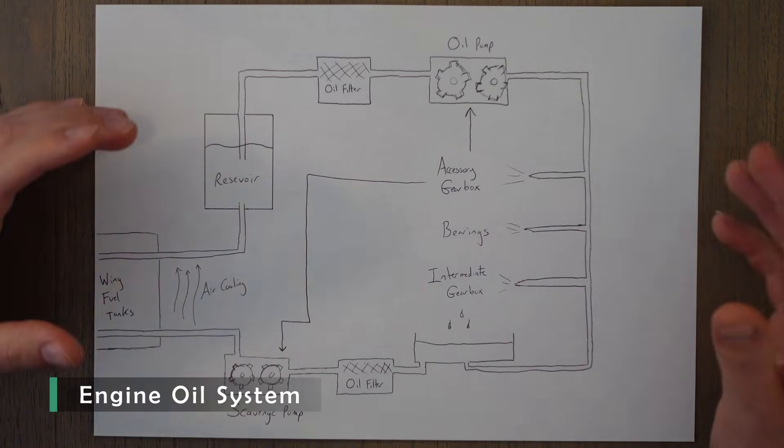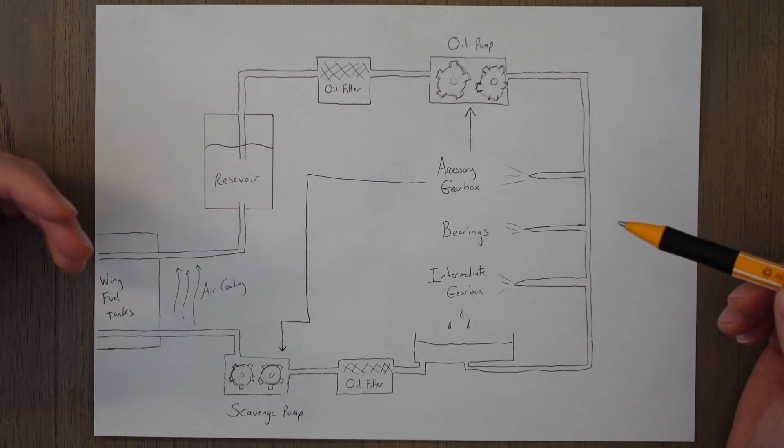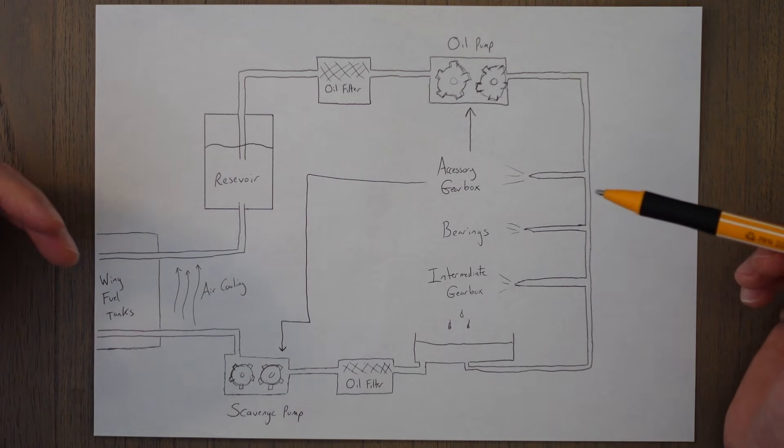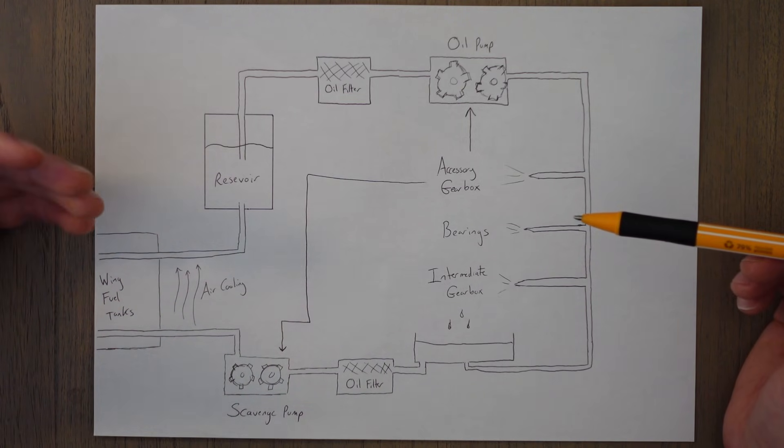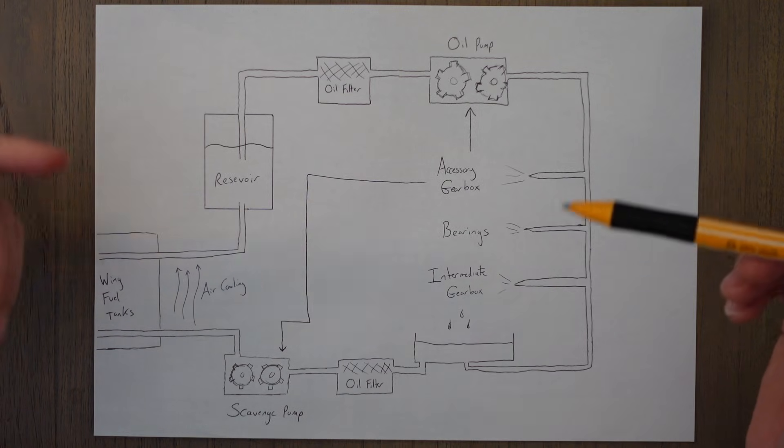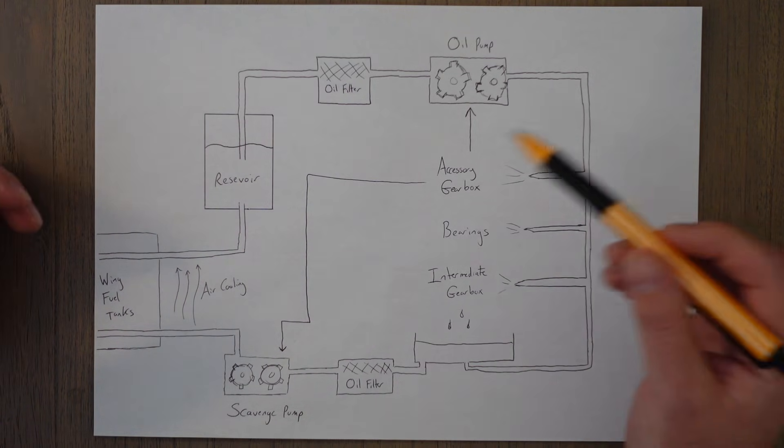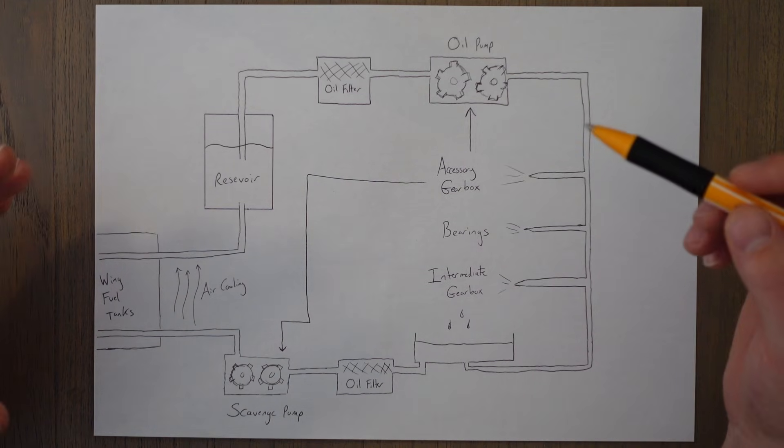The oil system lubricates and reduces friction between components while also drawing heat away from those components. The main components that need cooled and lubricated are the bearings that are in the main engine shaft and the accessory gearbox. The type of oil system used is a dry sump system.